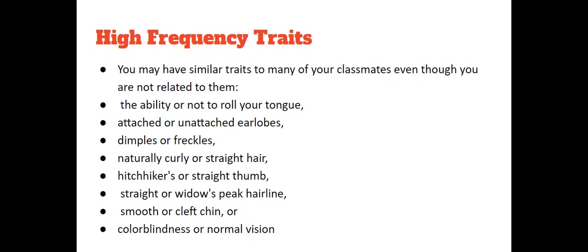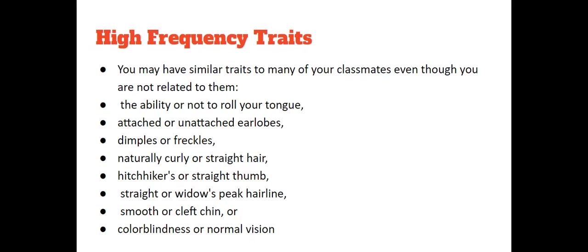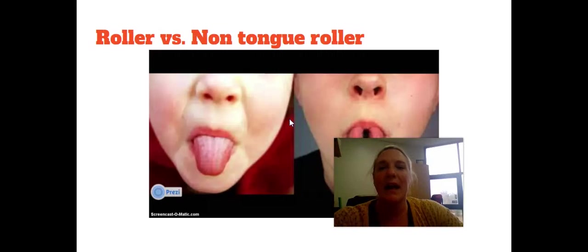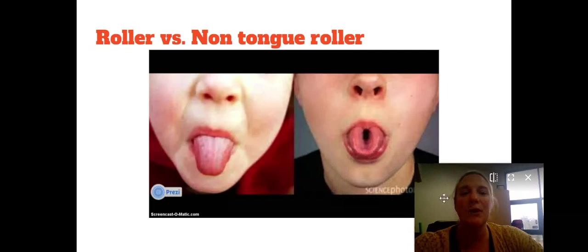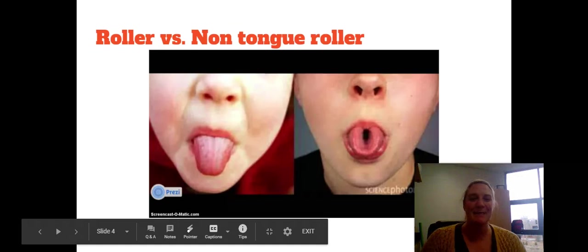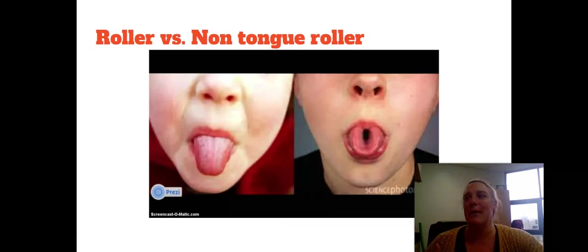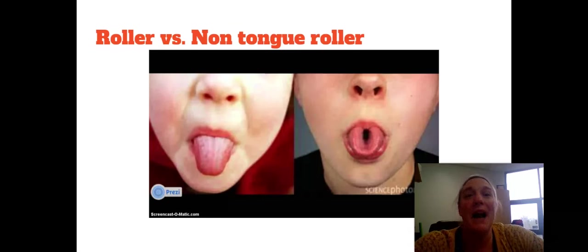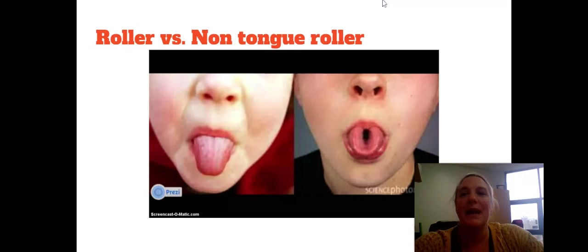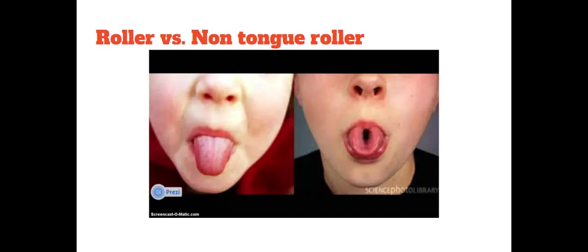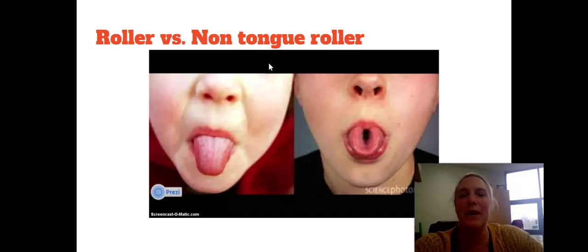For this first one — tongue roller versus non-tongue roller — don't ever write just yes or no, because that's going to get confusing. Write the trait: tongue roller or non-tongue roller. So you're going to determine if you have the ability to roll your tongue like this picture. Sometimes students get frustrated if they can't do something, but there's nothing you can do about it — you completely inherited these things. Like me, I cannot roll my tongue. So just stick out your tongue and see if you're able to roll it, then write tongue roller or non-tongue roller. Don't put anything for recessive or dominant just yet.